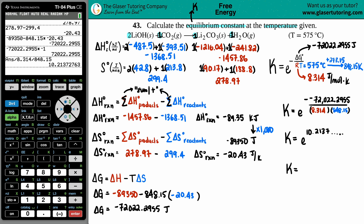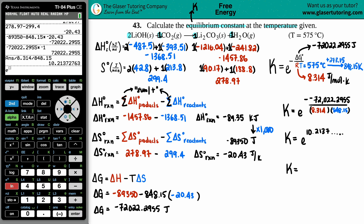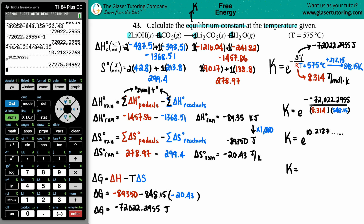To get the e button on the TI-84, press second LN. Raise it to that full decimal value and press enter. Checking significant figures: temperature has five sig figs, R has four, so we use four sig figs. The answer in scientific notation: 2.728 times 10 to the 4th. There are no units for the equilibrium constant, and you're done.